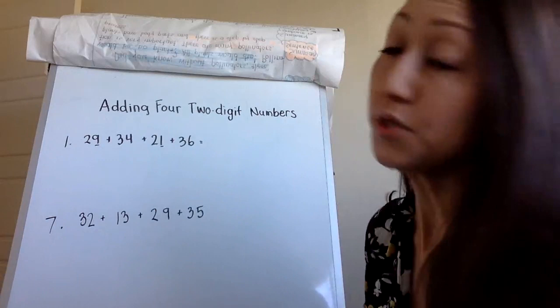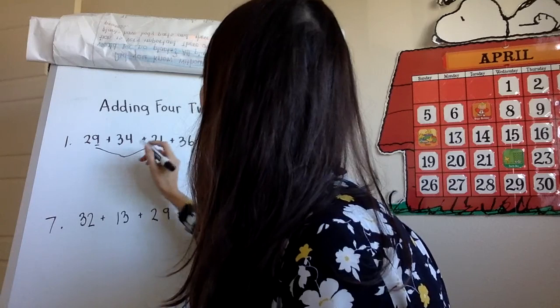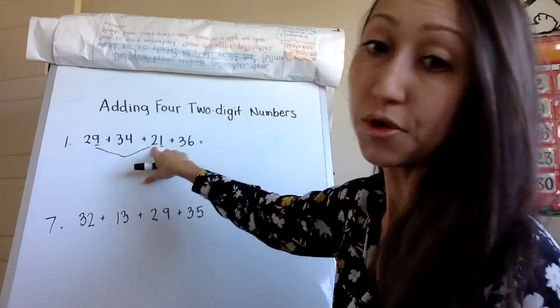So 29 + 21. I have 2 tens and 2 tens here, so I know that's 4 tens. Then I have 9 and 1, which makes another ten. So 40 + 10 is 50.